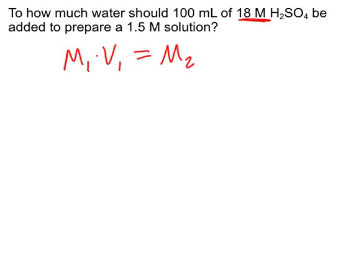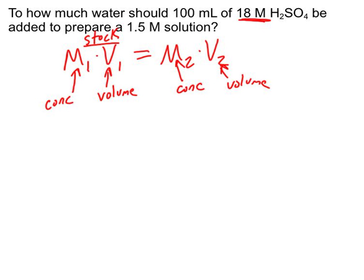And what these represent is M is the concentration of our stock solution, so this is our concentration, and V is our initial volume of stock solution. And same thing here, our new solution, this is going to be the concentration of our new solution, and this will be the volume of our new solution. So this is our stock, like what we have in the stock room, and this is our new solution, what we're trying to prepare.